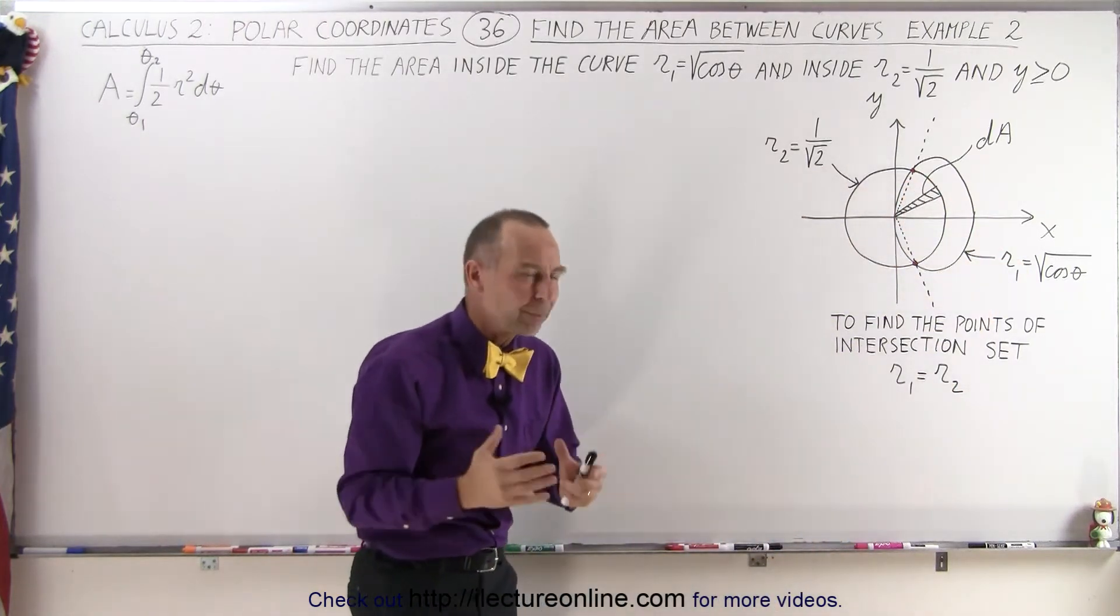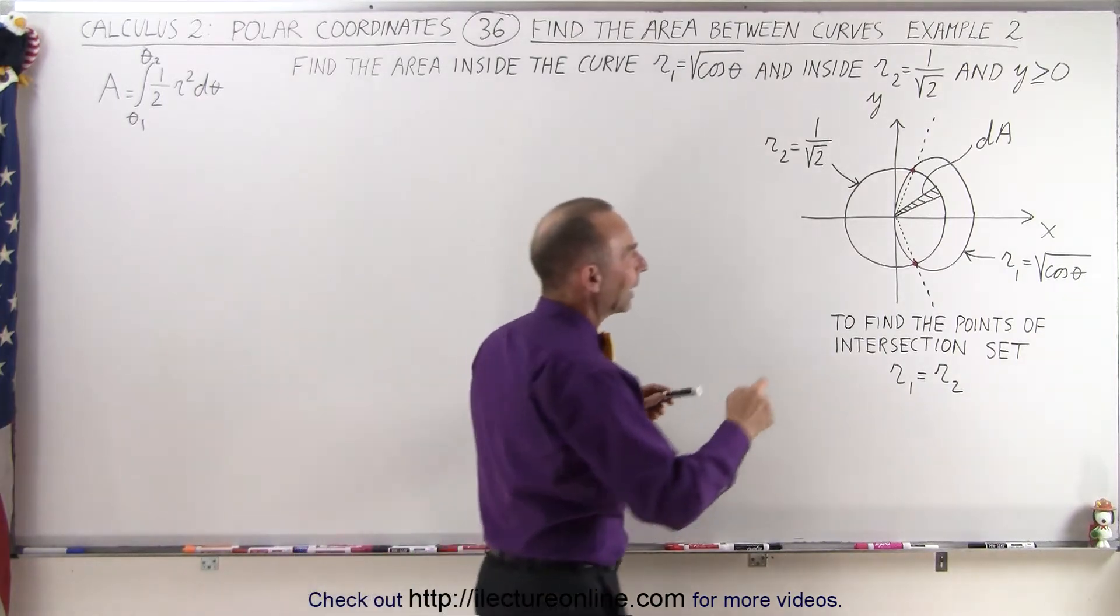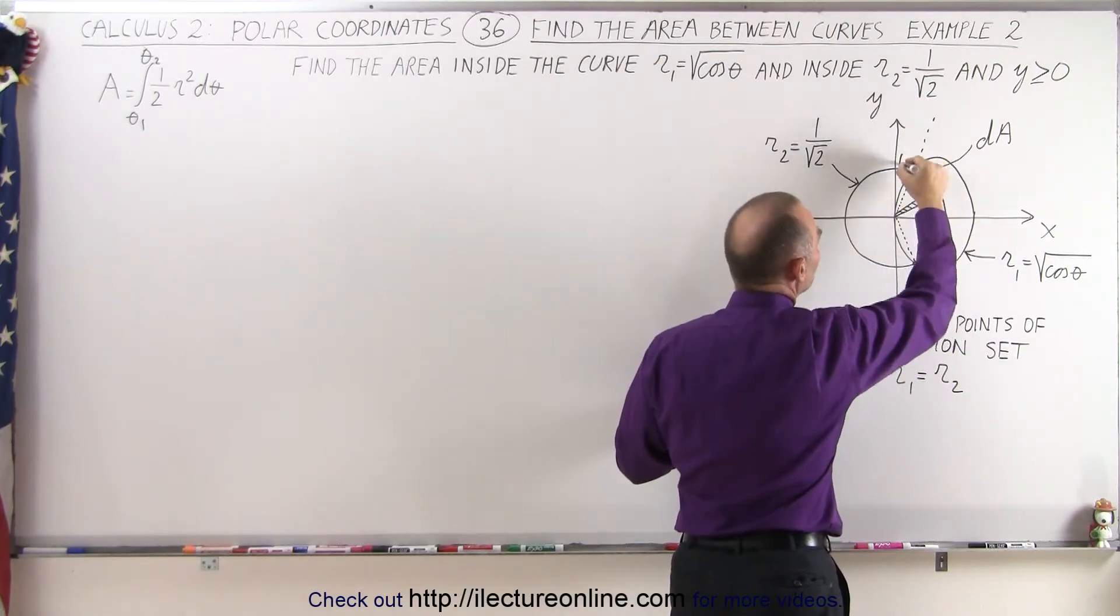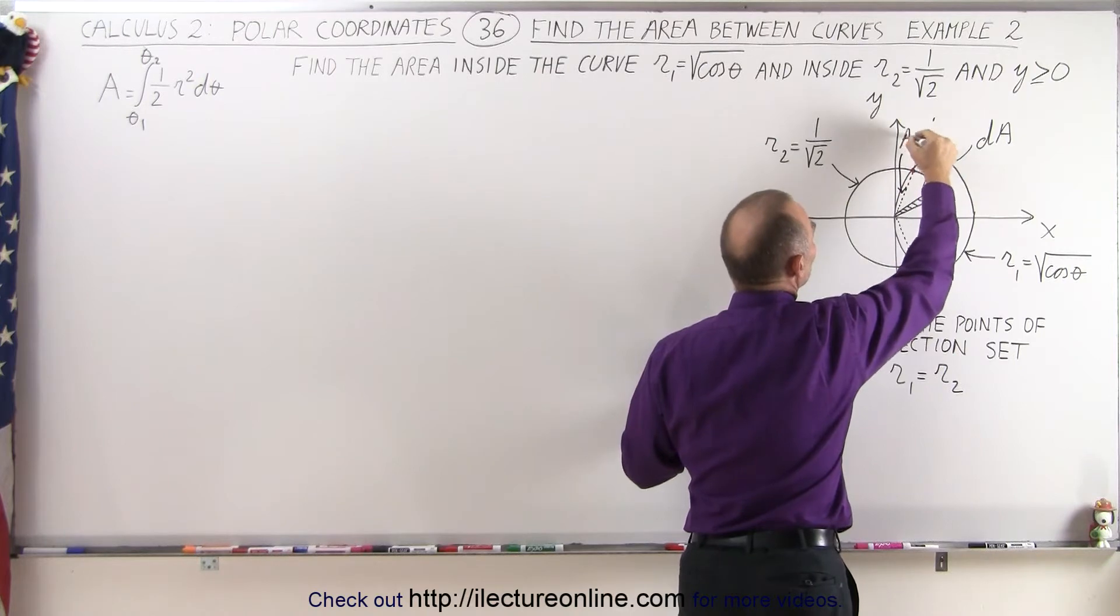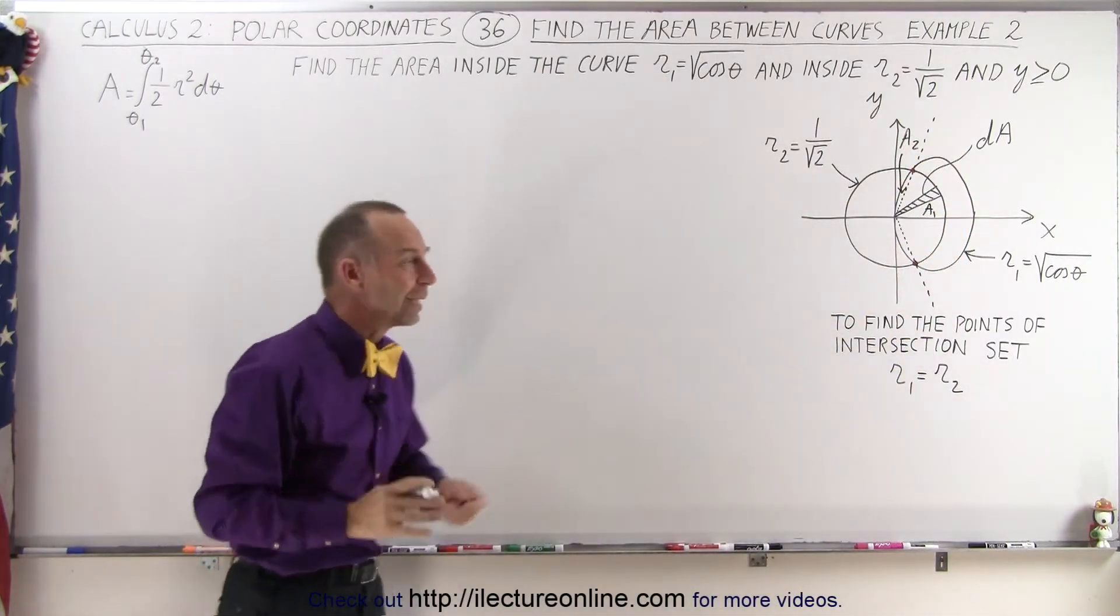So we actually will end up with two separate integrals that we have to add together. In other words, area 1 is going to be this section right here, and area 2 will be this additional section right there, and the total area will be the sum of the two areas, and they'll have to be integrated differently.